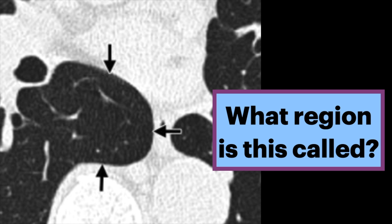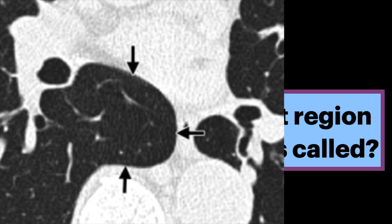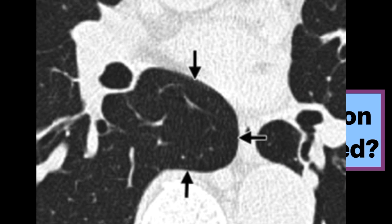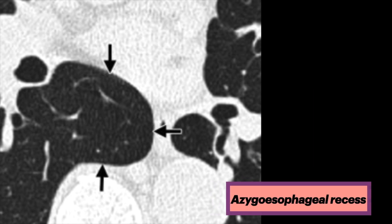What is this region called? On this axial CT, the arrows point at a region of the right lower lobe lung, which is bounded by the vertebral column, esophagus, and other mediastinal structures. This is the azagoesophageal recess.